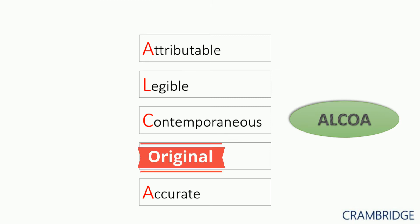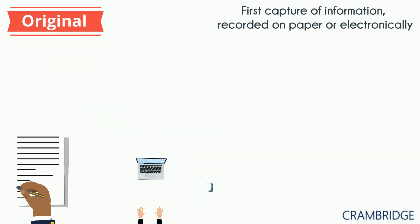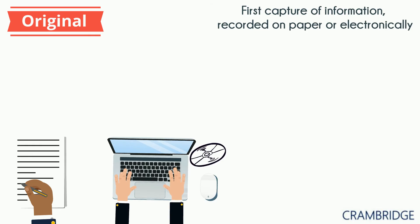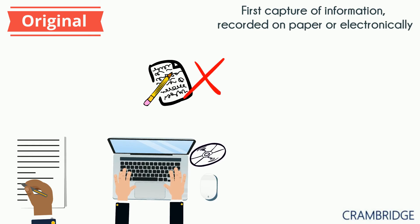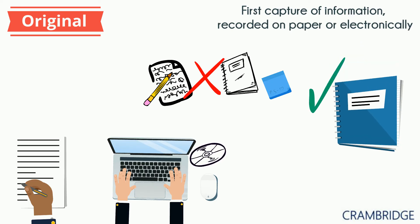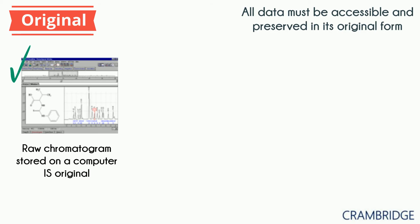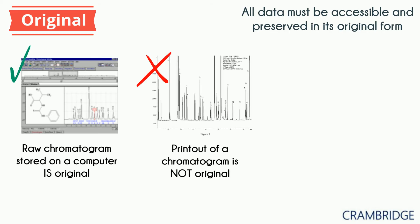O stands for original — it's the first capture of information, whether recorded on paper or electronically. Data should not be recorded on a scrap piece of paper, a rough notebook, or a post-it. Always record on an approved document. A raw chromatogram stored on a computer is original, but a printout of the chromatogram cannot be considered original as it may have been processed before being printed.